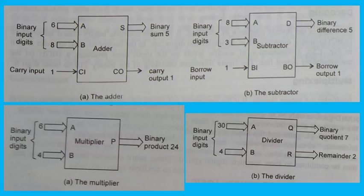The arithmetic operation of division can be performed by a digital logic circuit called the divider. Division can also be performed by an adder since it involves a series of subtractions, comparisons, and shifts. Its function is to divide dividend A by divisor B and generate a quotient term Q and a remainder term R. Figure 2b illustrates the division of the binary equivalent of 30 by the binary equivalent of 4, resulting in a binary quotient term 7 and a remainder term 2.